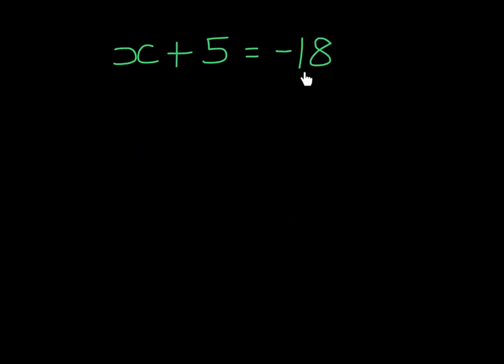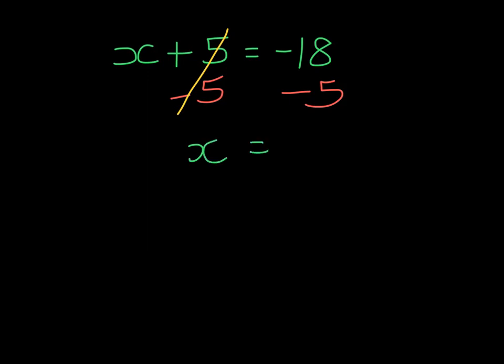Here's our next example and we see we have negative 18 on the right hand side and we are adding 5 to X. The inverse of this would be to subtract 5 from both sides. On the left hand side if I add 5 then subtract 5 I'm left with X, and on the right hand side if I owe 18 and I owe 5, I owe 23.